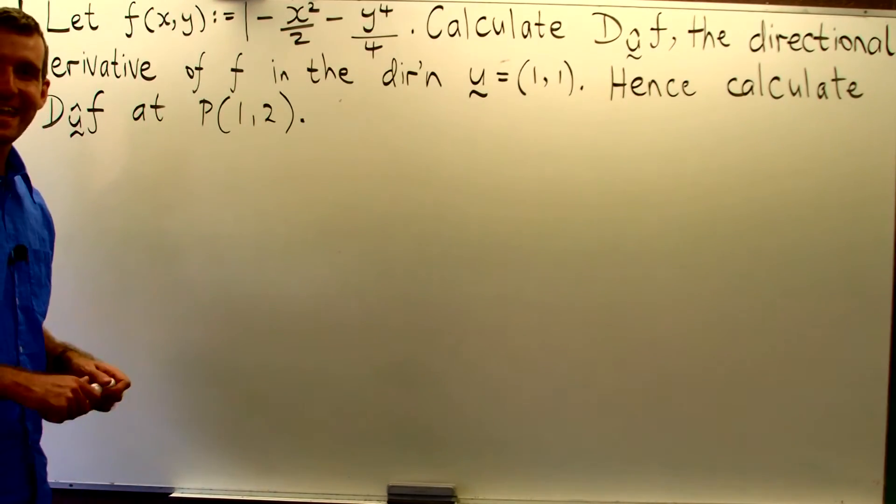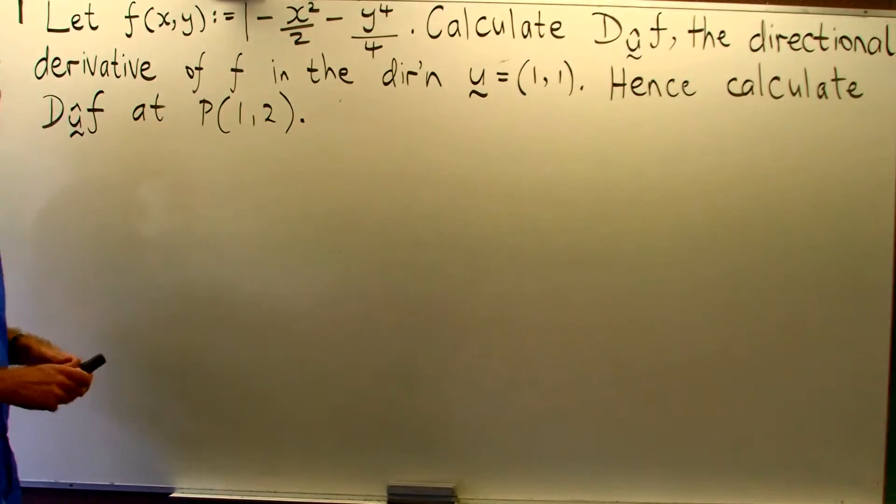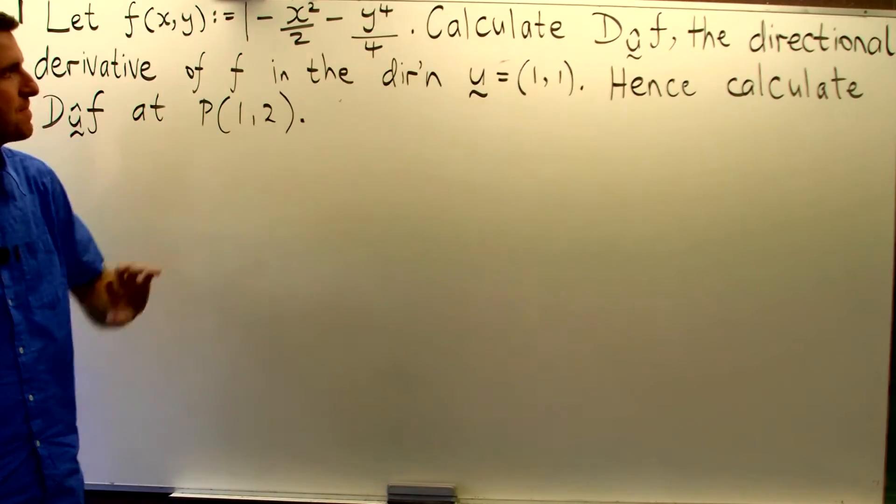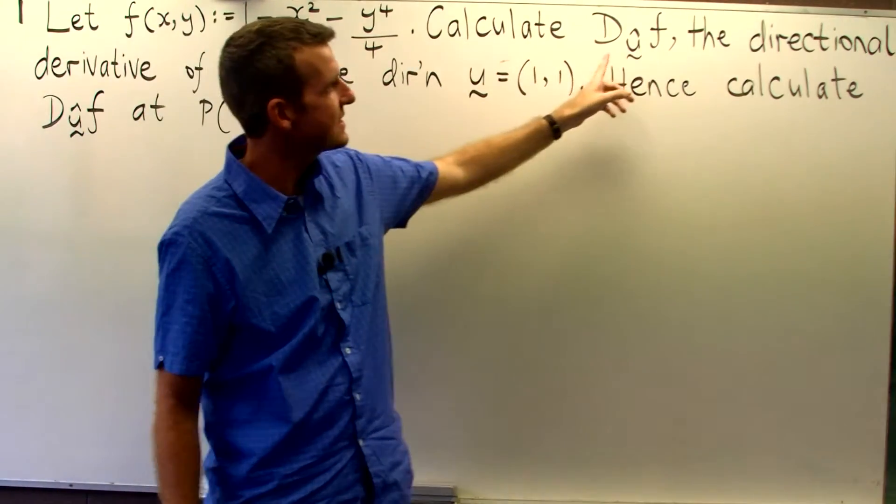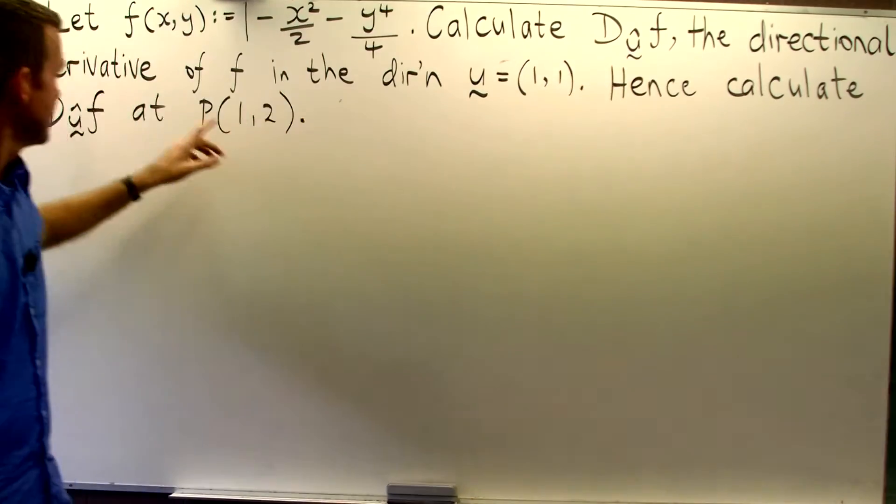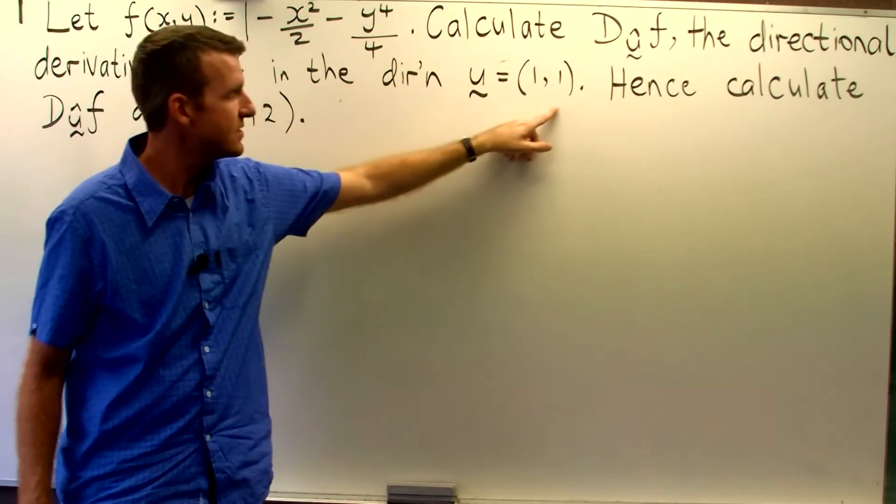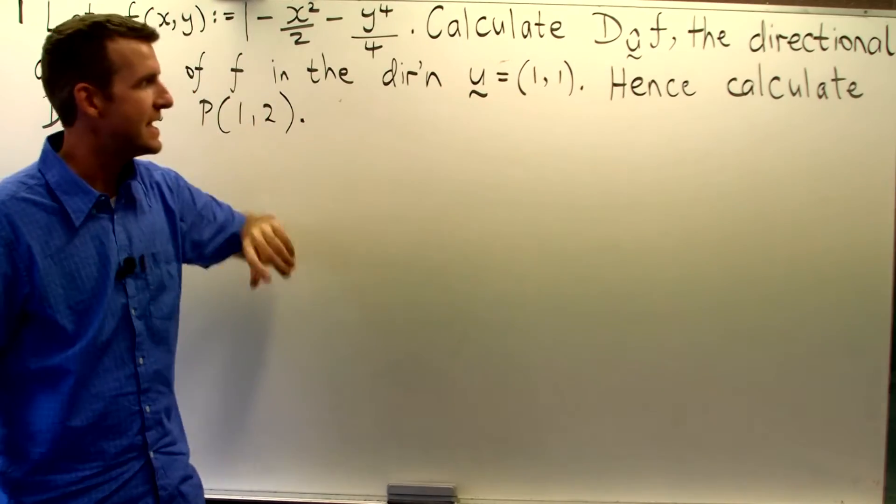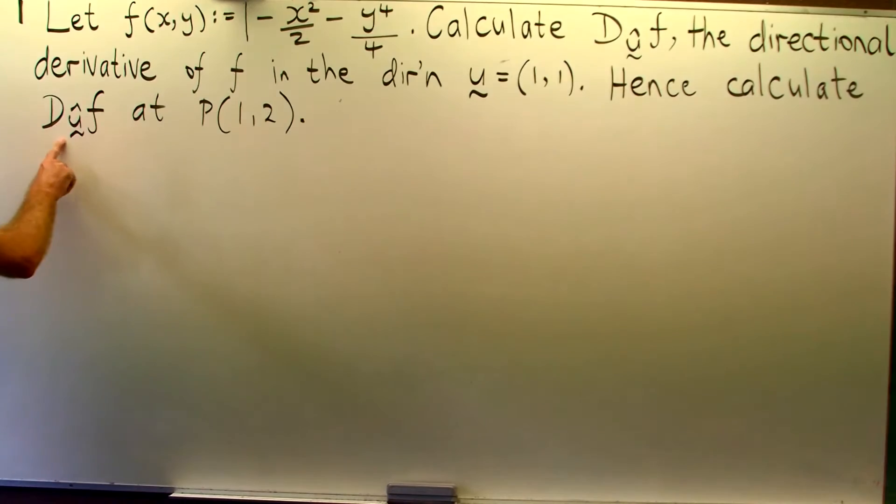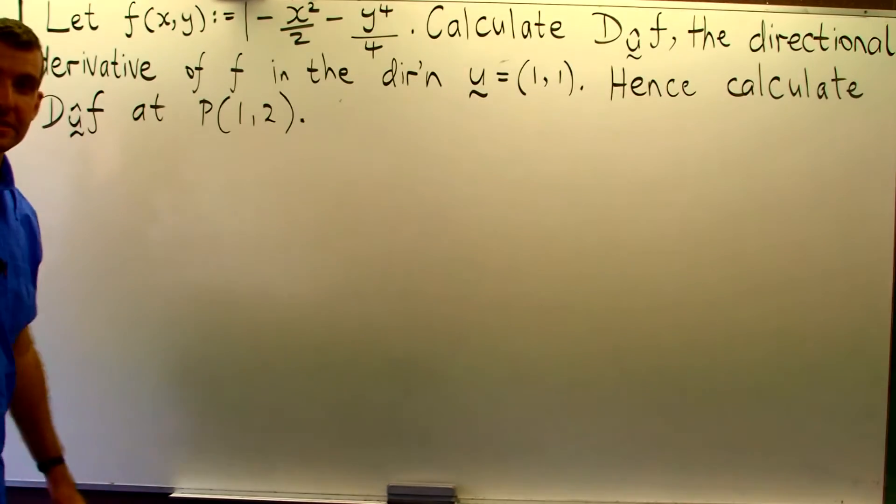Hi everyone. Today we're going to discuss the following problem. If we have a function of two variables defined in this way, we're asked to calculate the directional derivative denoted by this, the directional derivative of f in the direction of this vector, and then we're asked to use that information to calculate the directional derivative at a particular point p.